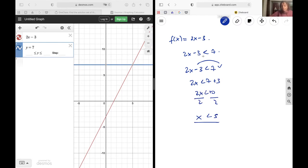We're not going to include the 5 because we've been asked for when the output is less than 7, not when the output is 7. At x is equal to 5, the output is 7, and so our answer is going to be when x is less than 5.